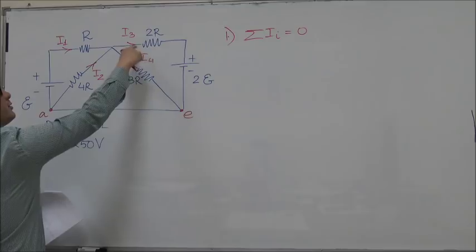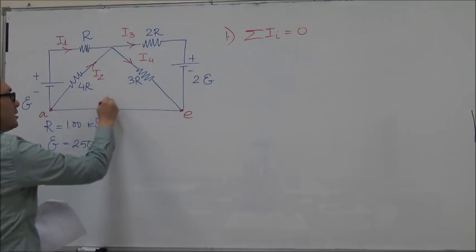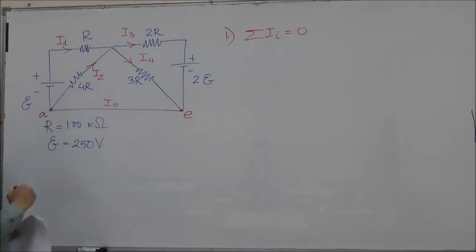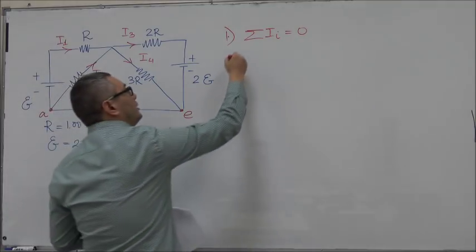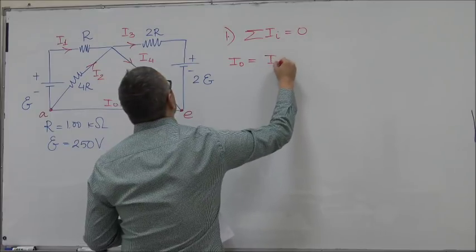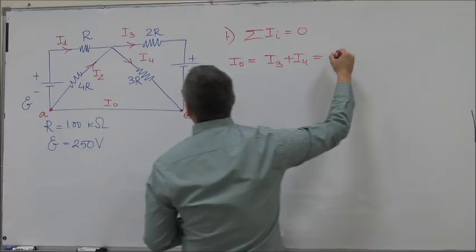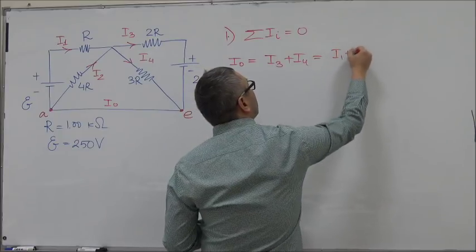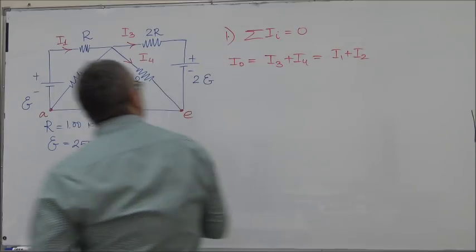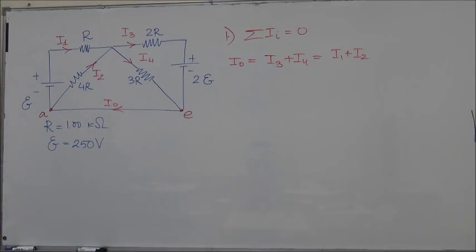The current flowing in the wire AE would be the sum of I3 plus I4, or I1 plus I2. Let's call it I0, so I0 is equal to I3 plus I4 or I1 plus I2. The choice of the direction of the current here is random.